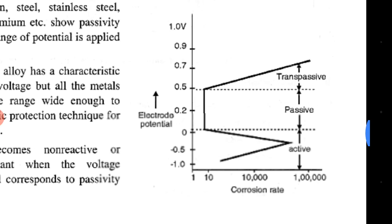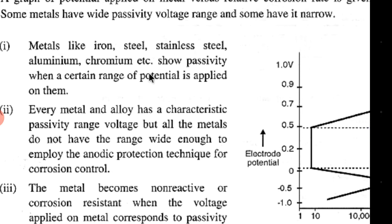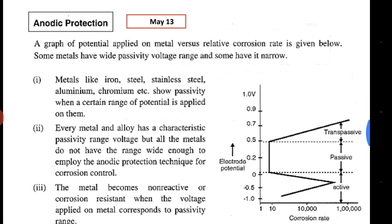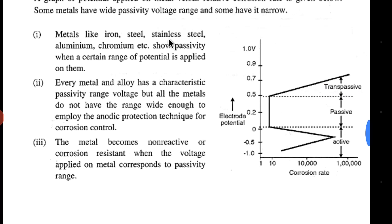For any metal, if the passive range potential is applied, it will not react to the medium or environment present. For example, if you supply a passive voltage to an iron tank, it will get protected even if you keep acid, base, or any corrosive material in that tank. The only drawback of this method is that you have to maintain that potential continuously.